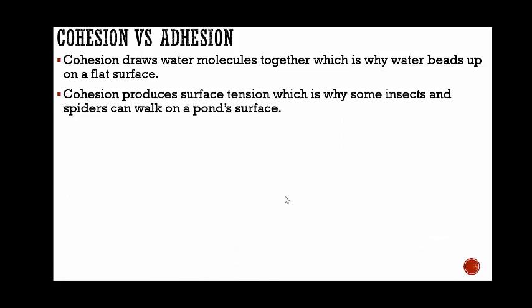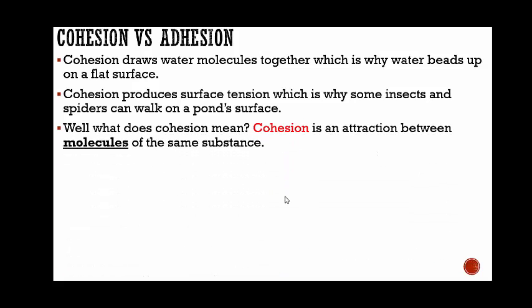Cohesion produces surface tension, which is why some insects and spiders can walk on a pond surface. Cohesion is the water being attracted to one another.